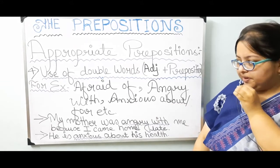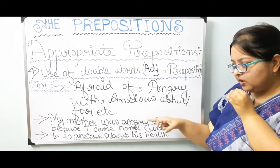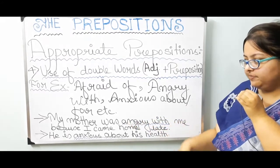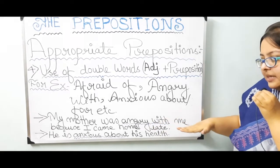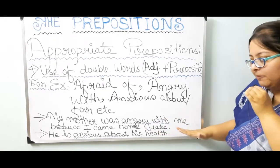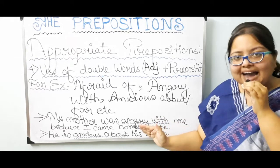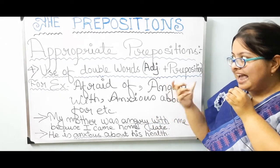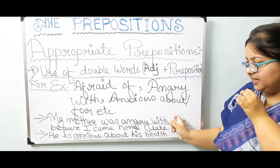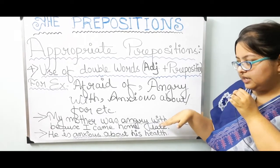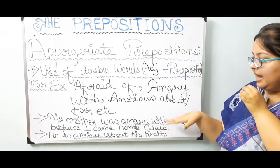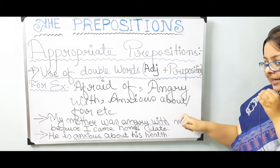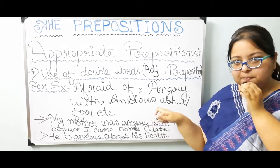First example: my mother was angry with me because I came home late. 'Angry with' is indicating the appropriate preposition. 'With' is the word of preposition and before that the adjective is used — both are combining to form the appropriate preposition.